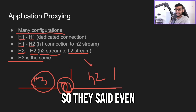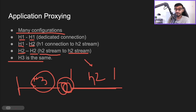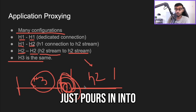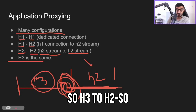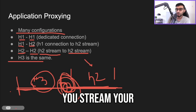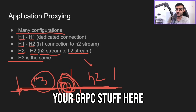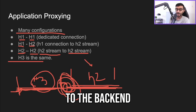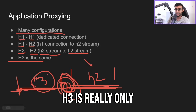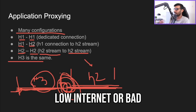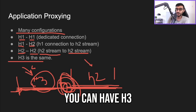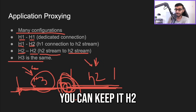They said you can still enable HTTP/3 — your reverse proxy advertises H3 as a stream, but that stream pours into an H2 stream on the back-end. So H3 to H2: you create an H3 stream, which creates an H2 stream on the back-end, and your gRPC data flows all the way through. H3 is really only required when you have low or bad internet connectivity with packet loss and TCP head-of-line blocking. Inside the data center you can keep it H2.